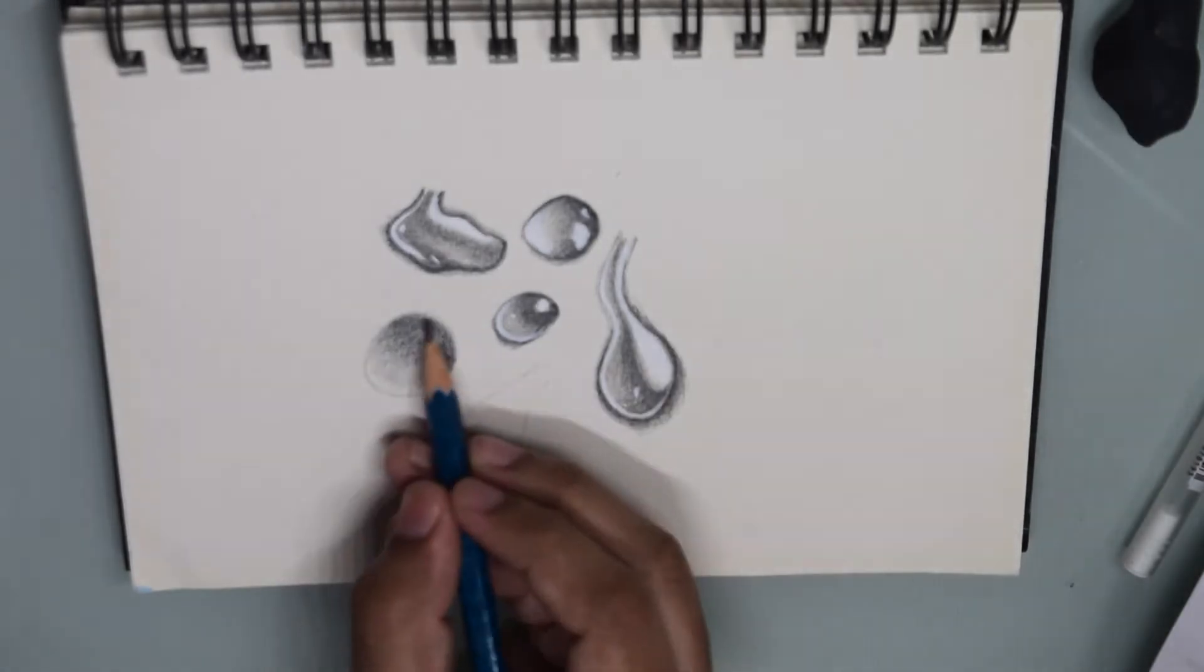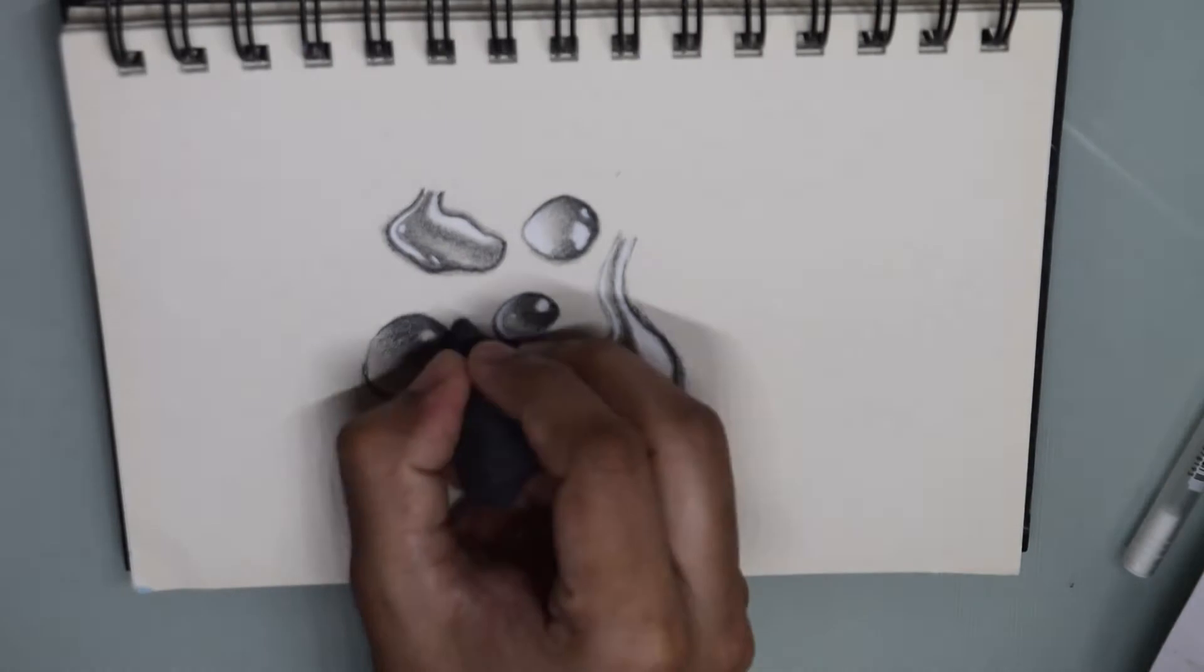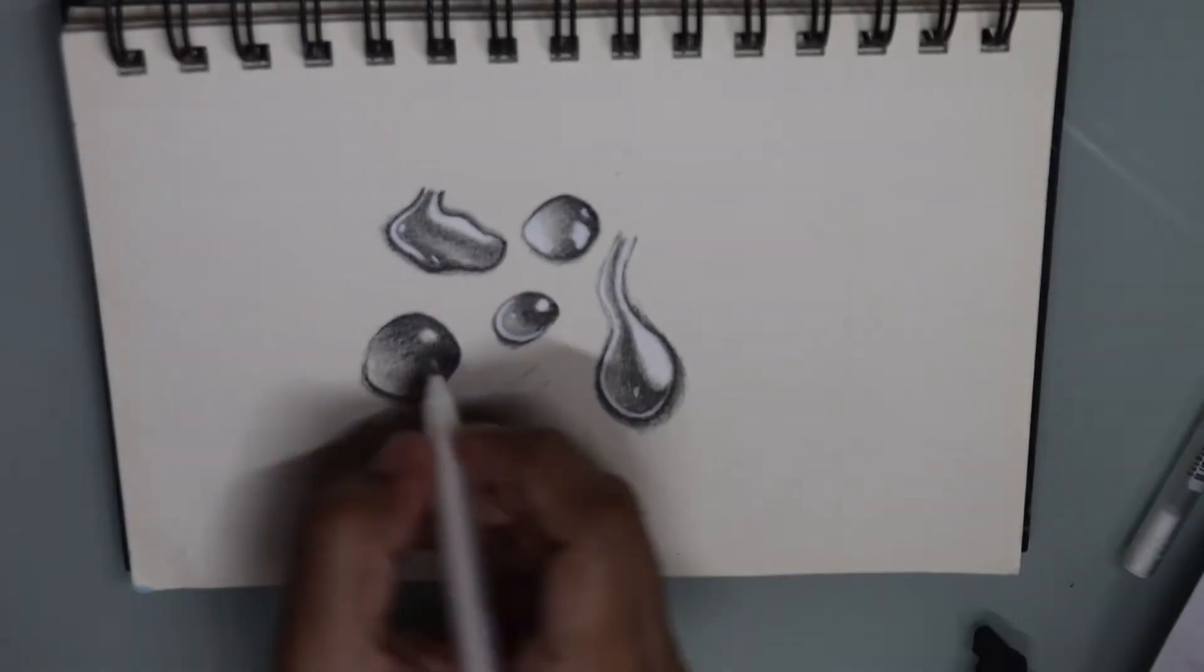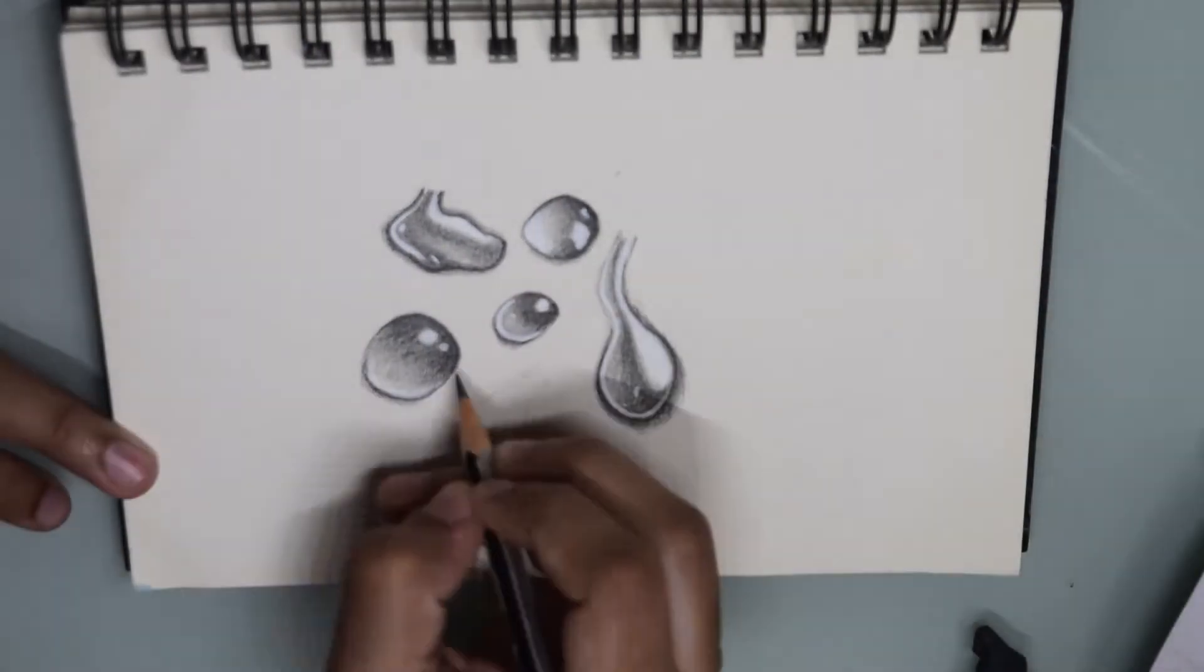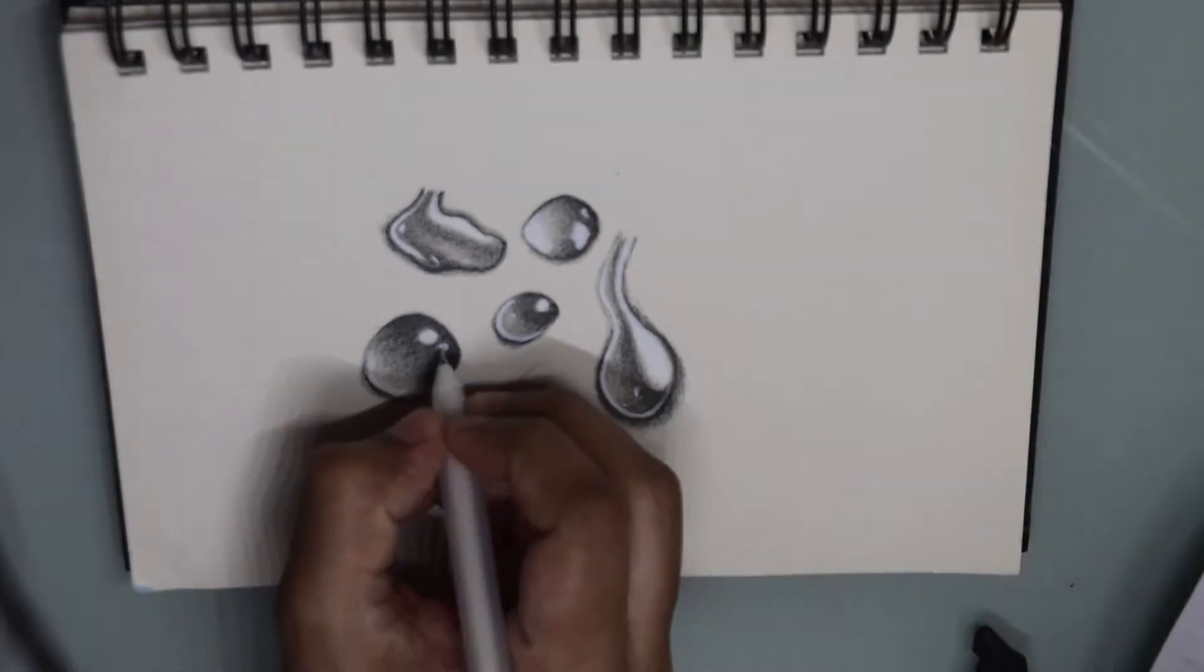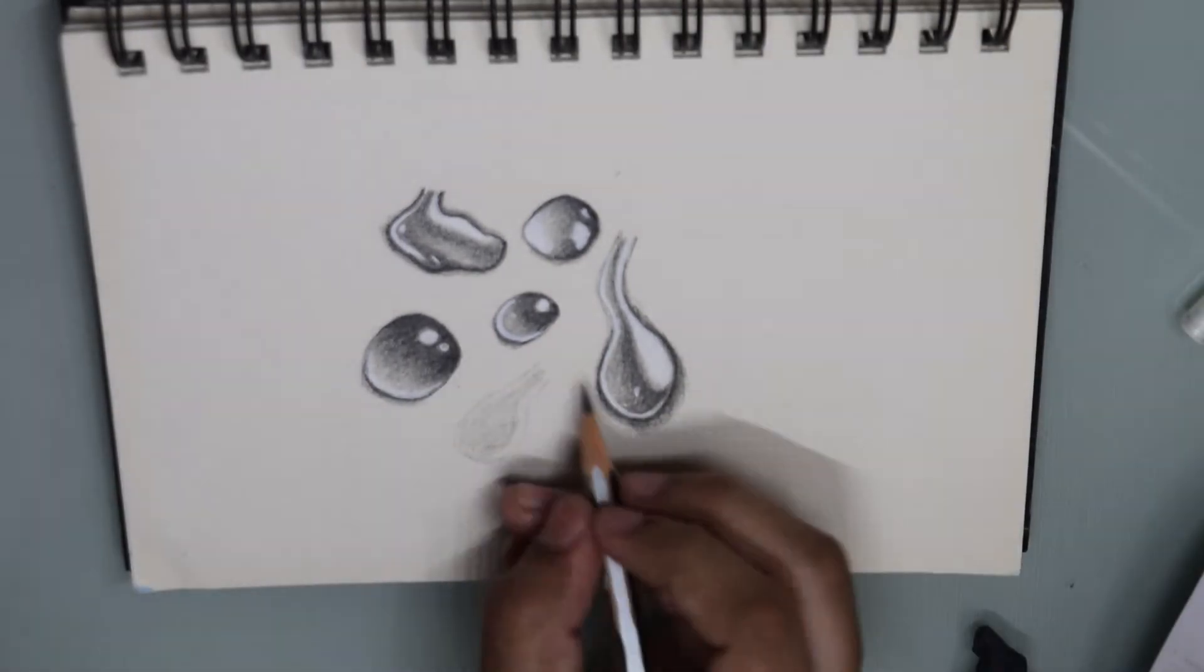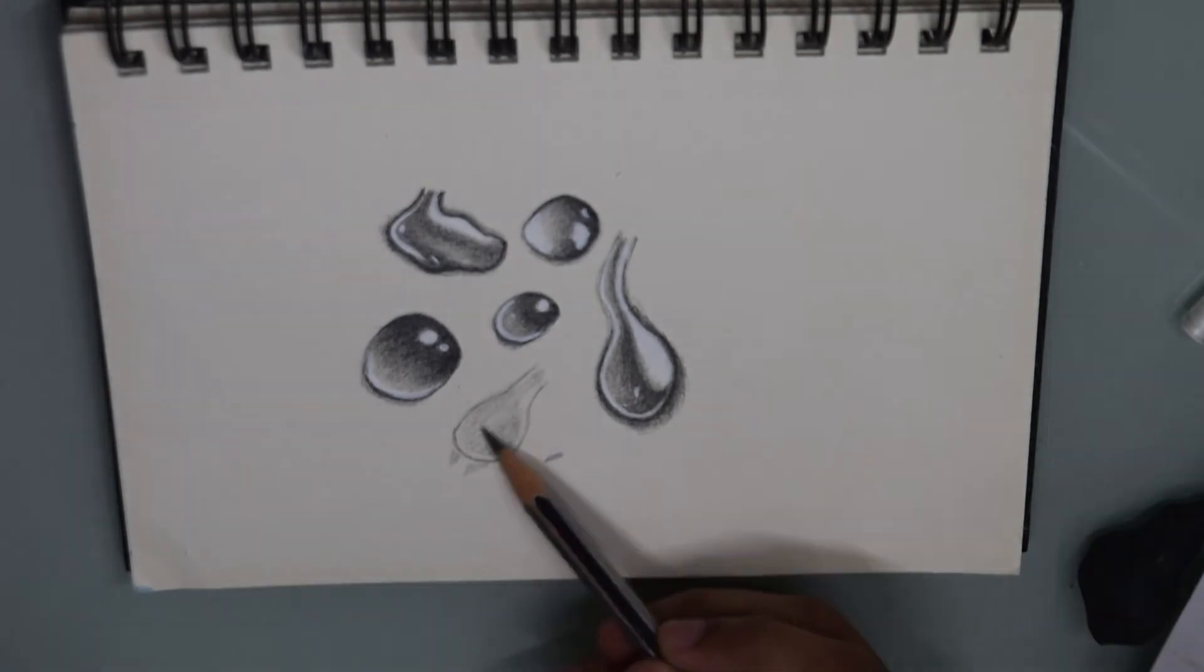In the portions where a highlight is seen, the values are darker in this area instead of being lighter. I am using a white gel pen to get the highlight on the water droplet. You may use a white charcoal pencil or a white pastel pencil for achieving the same look.